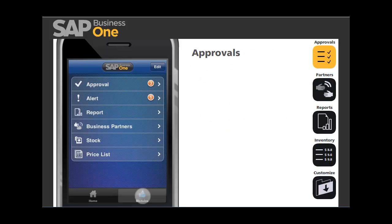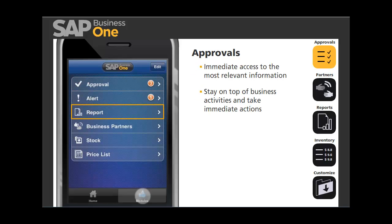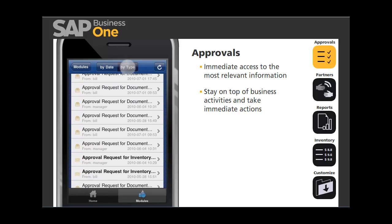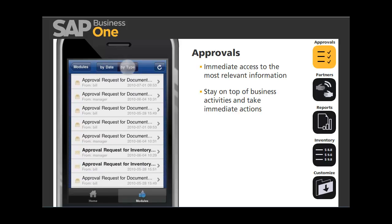With the SAP Business One mobile application, immediate access to the most relevant information allows you to stay on top of business activities and take immediate actions. The user-friendly interface makes it easy to view pending approval tasks, sorting by date or by type, to quickly isolate inventory, payment, or order-related requests.